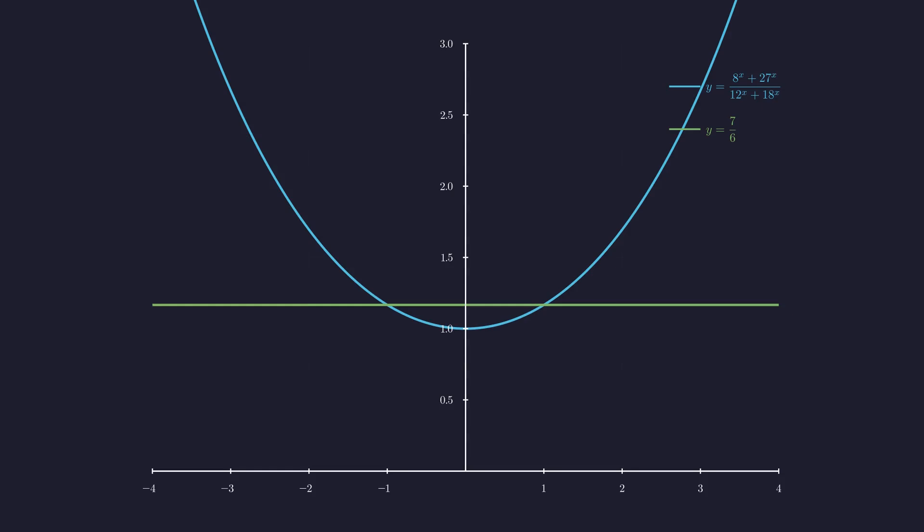Now, let's see this graphically. We'll plot both sides of our original equation and see where they intersect. Let's set up our coordinate system. The blue curve shows how the left side of our equation behaves, while the green line is the constant right side at 7/6.